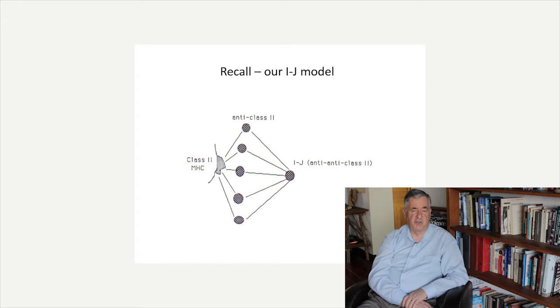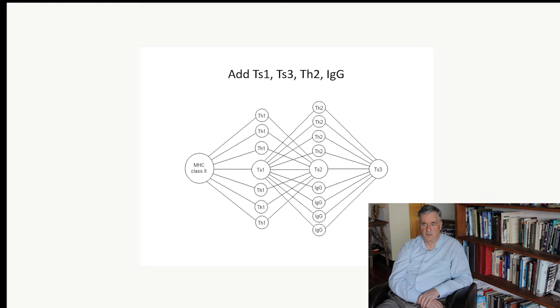So we start off by recalling again our IJ model with MHC class 2, anti-class 2, and anti-anti-class 2 being IJ. We're going to add to that model additional components that have been characterized by various immunologists in the 1980s in particular. Clones called TS1, TS3, TH2, and IgG producing clones are shown in this particular model.